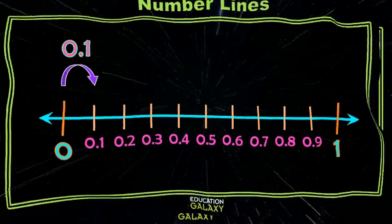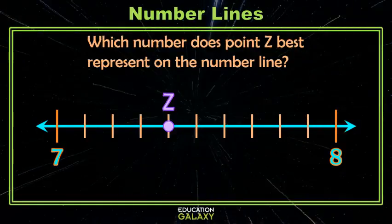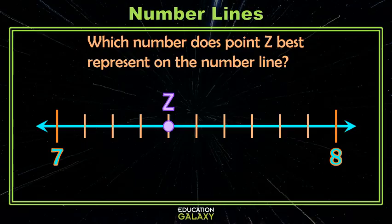Let's look at an example. Here we have the space between consecutive whole numbers 7 and 8. The space in between is broken into 10 equal parts. We're asked, where is point Z? Well, the first tick mark is 7 and 1 tenths, the next one is 7 and 2 tenths, next one is 7 and 3 tenths, which makes Z 7 and 4 tenths.